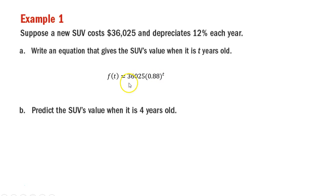Why 0.88? Because if the car's value stays the same, we would multiply $36,025 by 1 every year. What's happening is we're losing 12% of its value, so we multiply by 0.88 because it's maintaining 88% of its value every year. This 0.88 essentially comes from 1 minus 0.12. Every single year it is being multiplied by 0.88. This equation models the value of the SUV after t years.